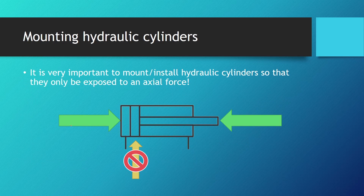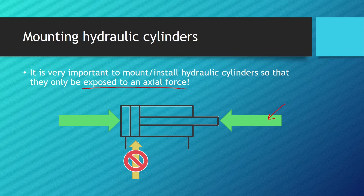It is very important that hydraulic cylinders be mounted on their base and installed on moving work elements in the right way. They should be mounted so that the cylinder is only exposed to axial loads, as shown in this picture. Forces in the direction of the green arrow are good, while side forces that cause bending loads on the cylinder are bad — we don't want our hydraulic cylinder to bend.